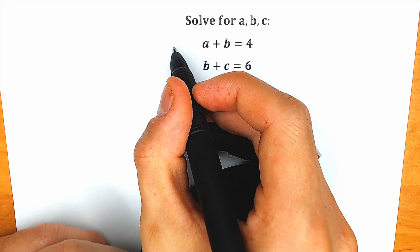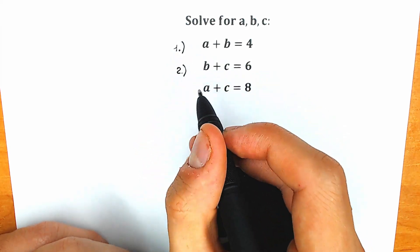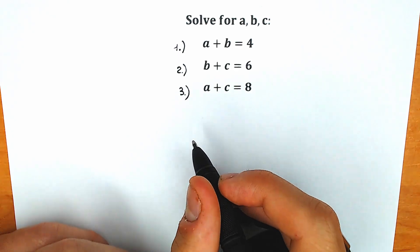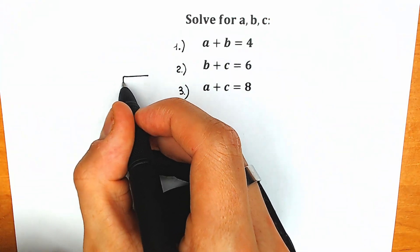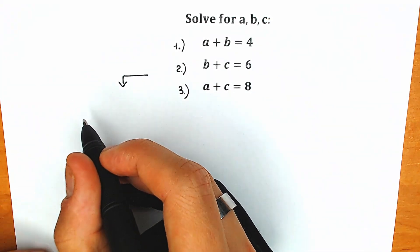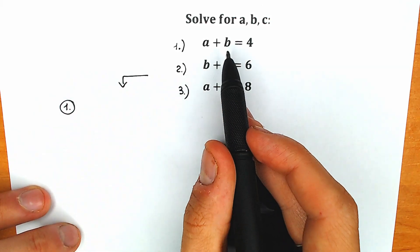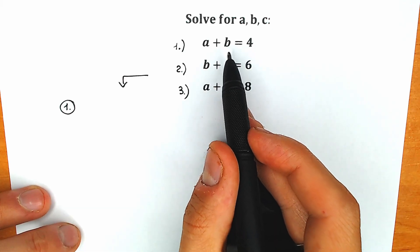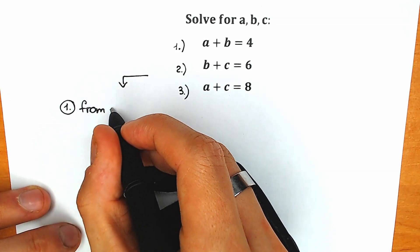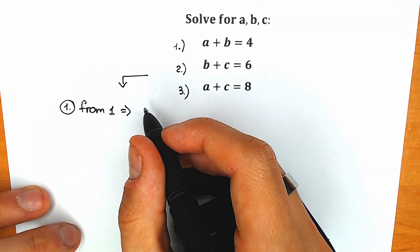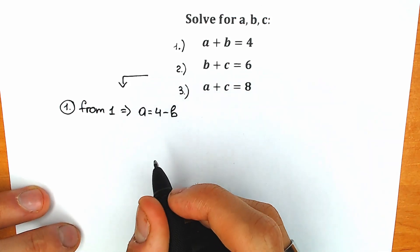I'm going to label the equations: a plus b equals 4 is the first equation, b plus c equals 6 is the second equation, and a plus c equals 8 is the third equation. So our first method: from the first equation, a plus b equals 4, let's express a. So a equals 4 minus b. This is from the first equation.